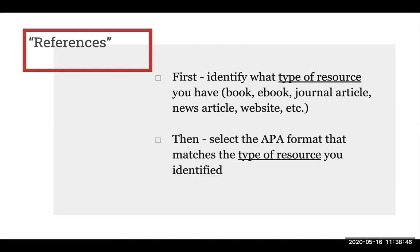The next step is to select an APA reference format that matches the type of resource you identified. If you are citing a book, you will need to follow the book reference format. If you are citing an article, you will need to follow the article reference format. APA style has reference format examples for all kinds of things, including movies, podcasts, and even social media. For this video, we'll be reviewing three commonly used reference formats: an e-book, an article from a library database, and a website.